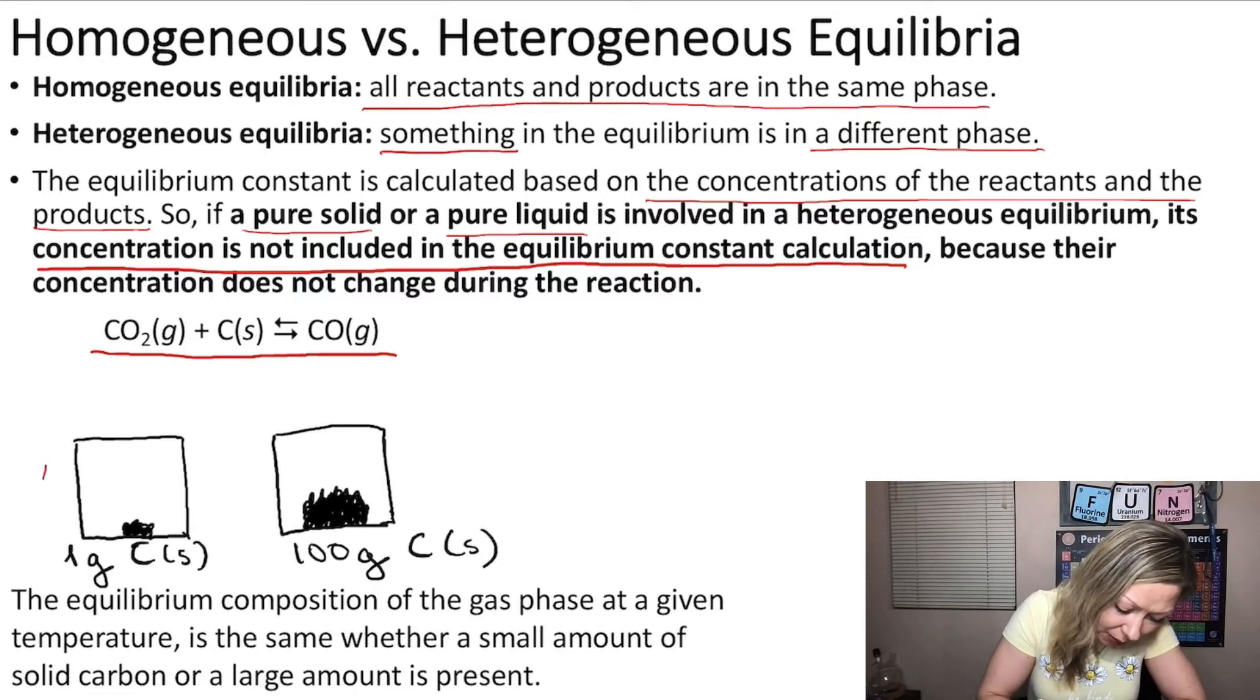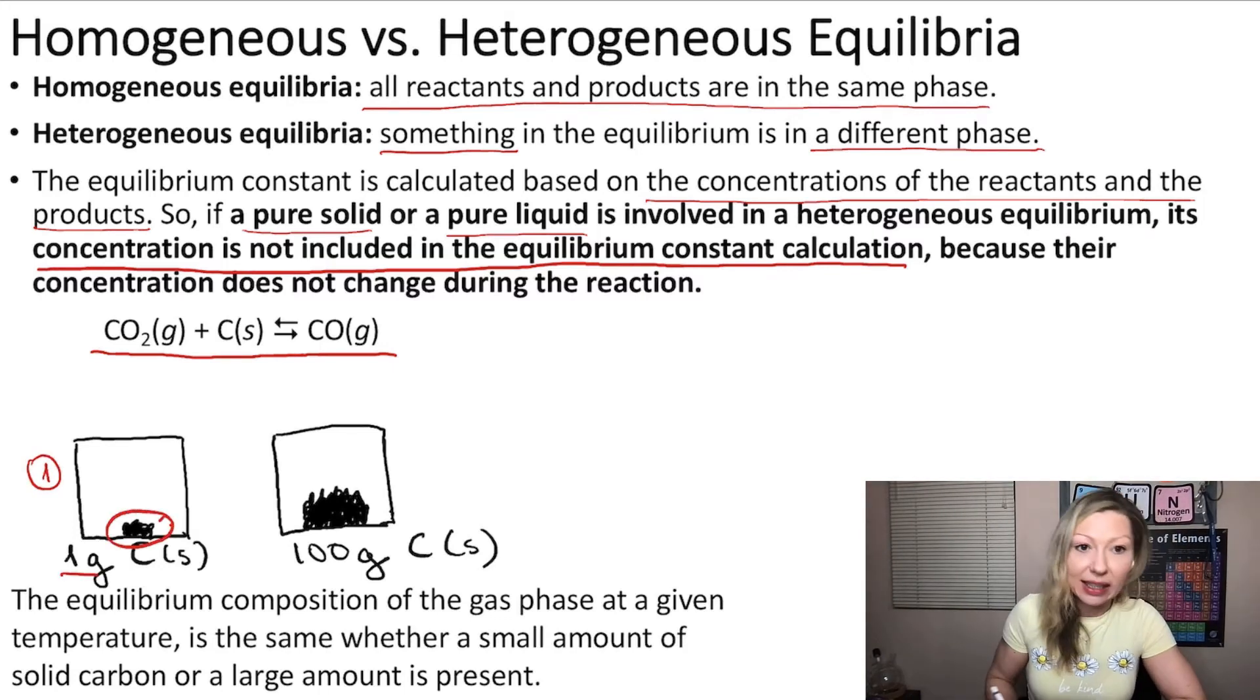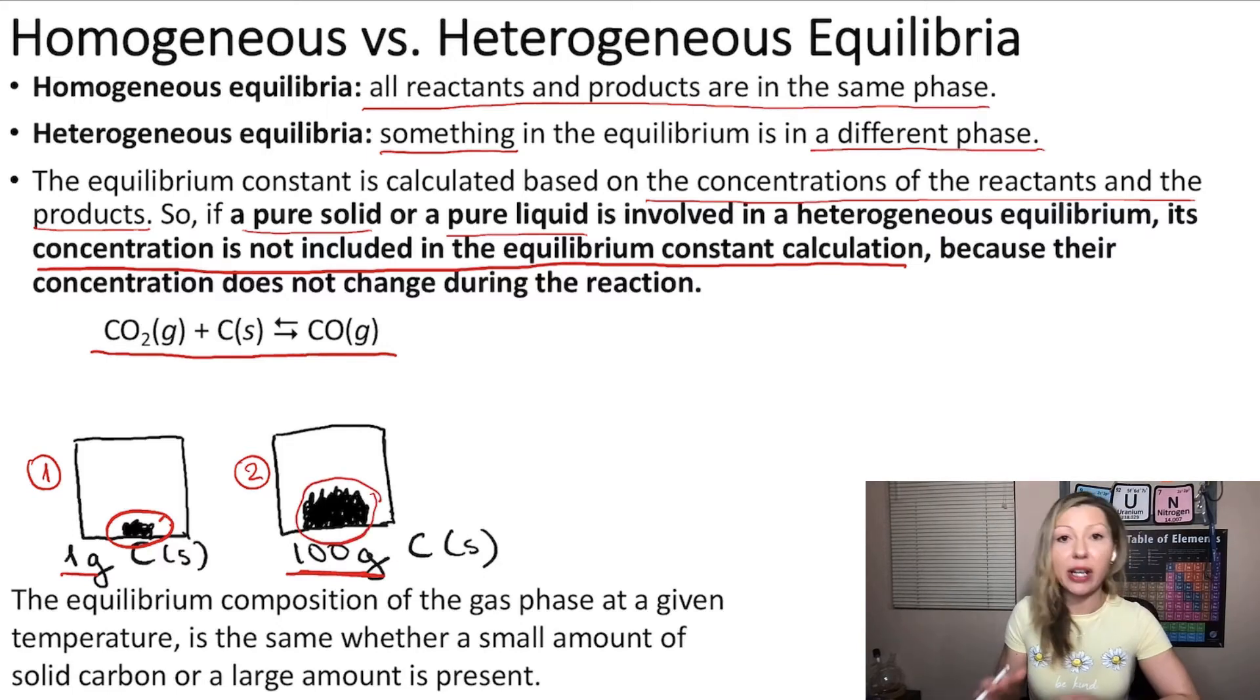Here we have a chamber, chamber number one, which has one gram of graphite in it right there. And here in chamber number two, we have actually 100 grams of graphite. So significantly more.